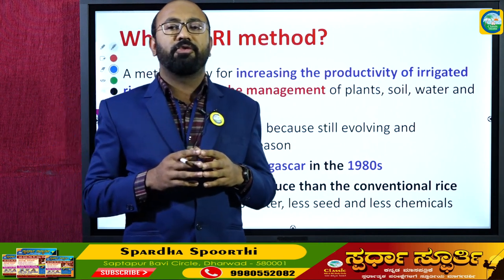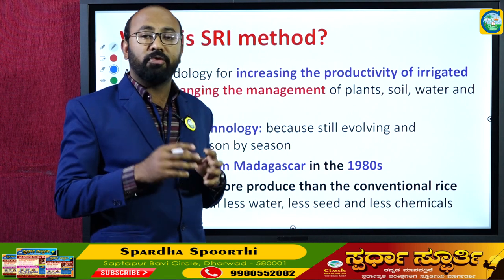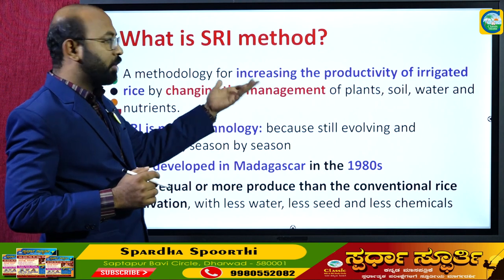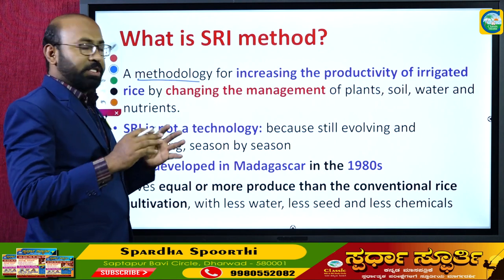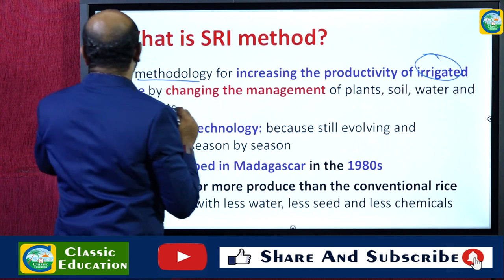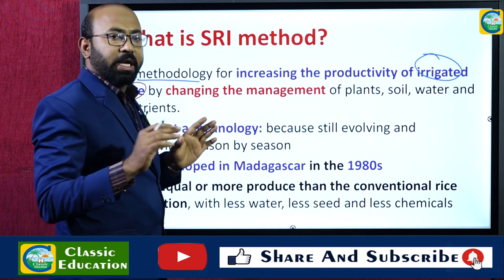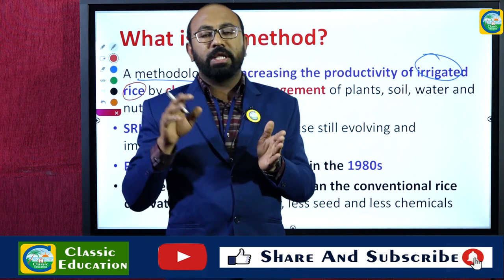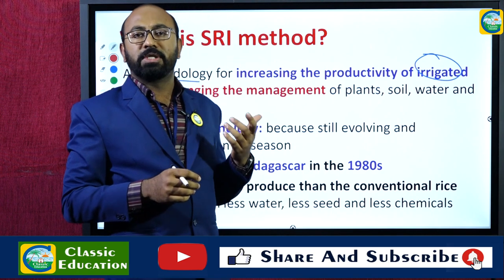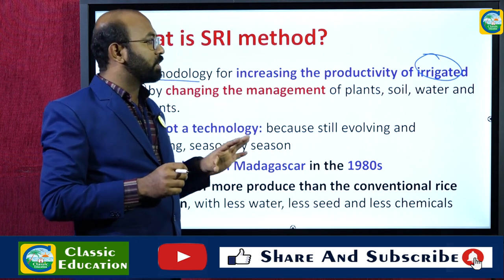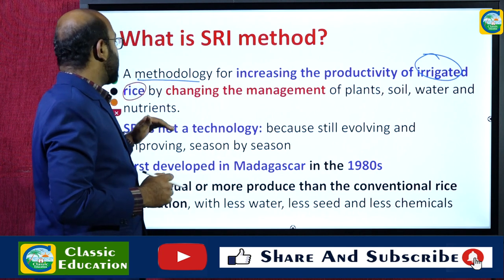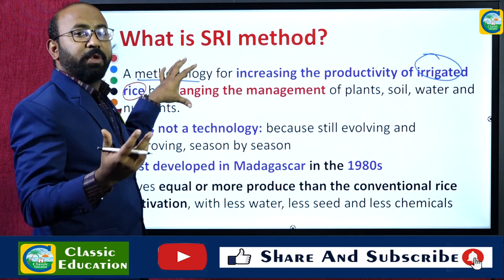So what is the SRI method of cultivation? It is a methodology — a method of increasing the productivity of irrigated rice. There are different types of rice cultivation: wet cultivation, dry cultivation, direct seeded rice, transplanted rice — but the SRI method is specifically related to irrigated rice, meaning we provide irrigation to this crop.